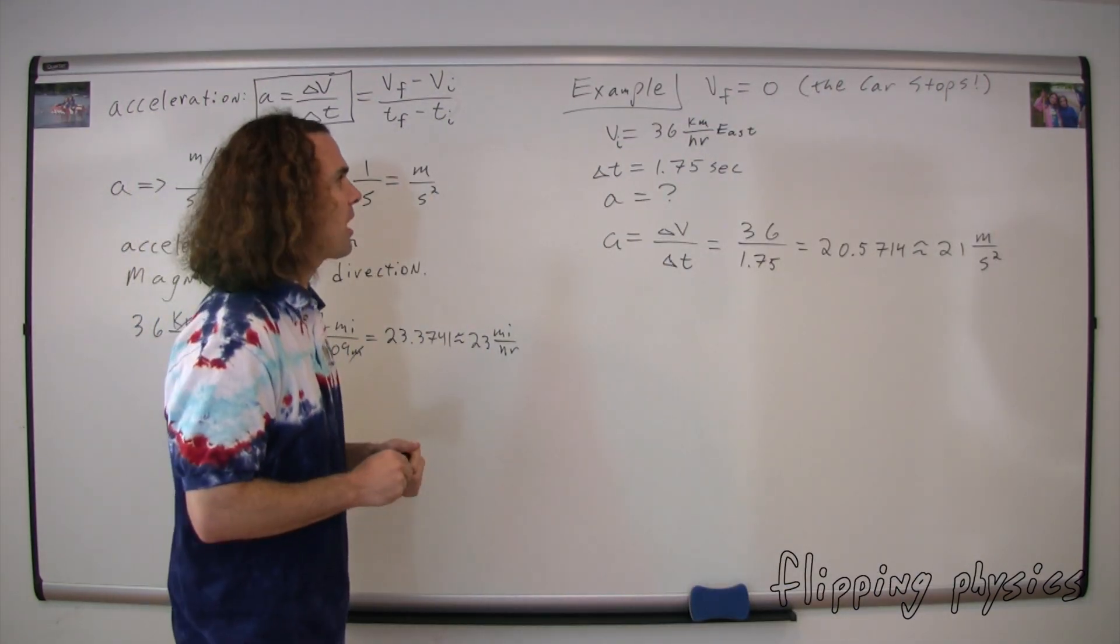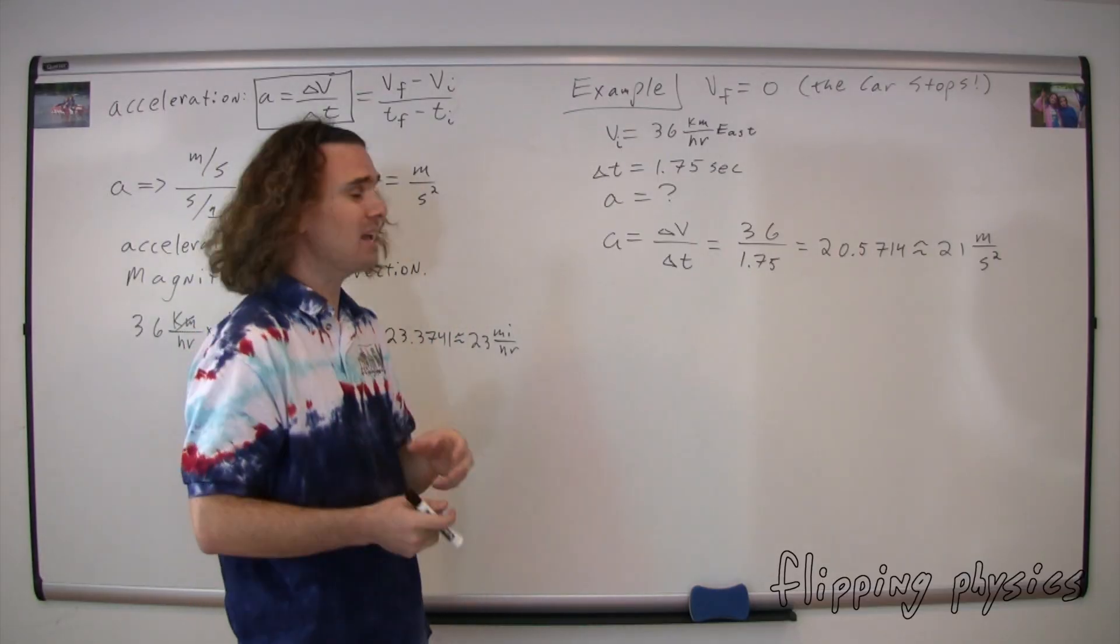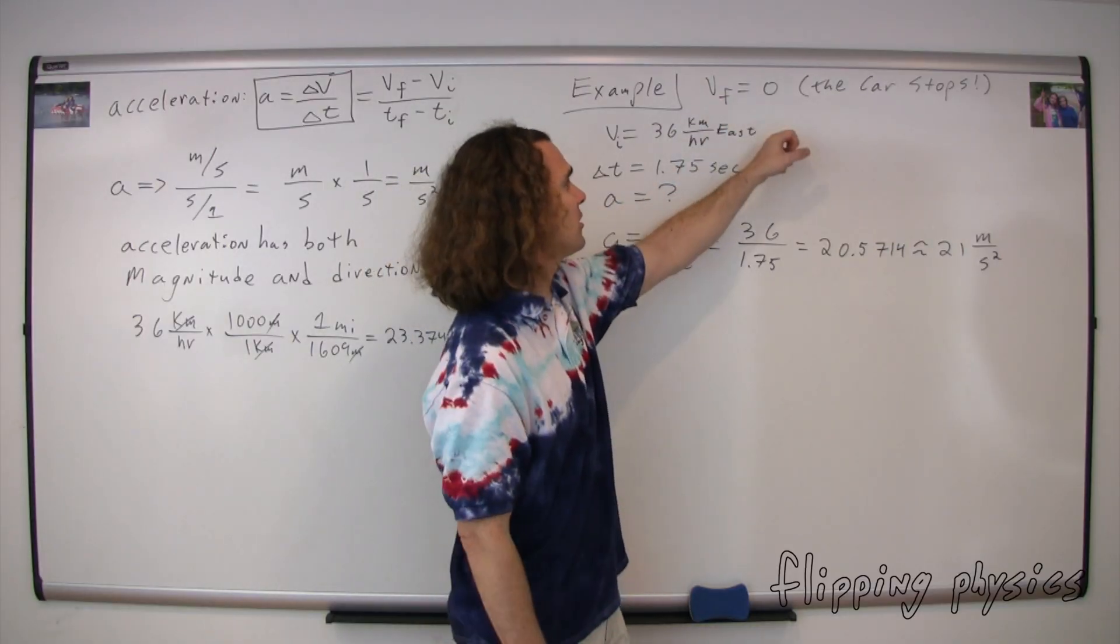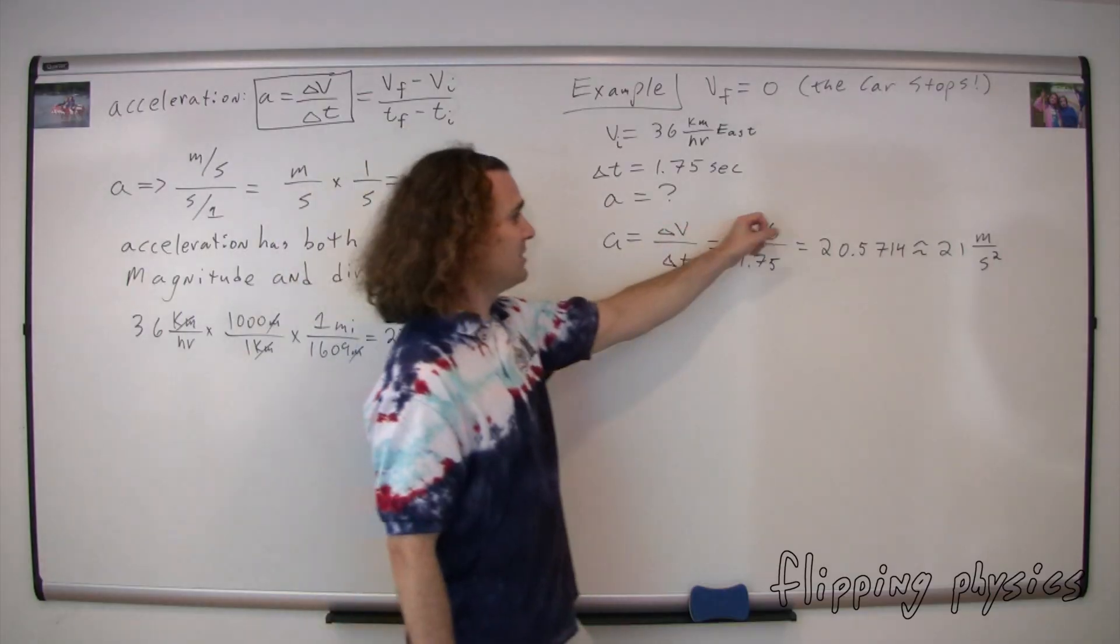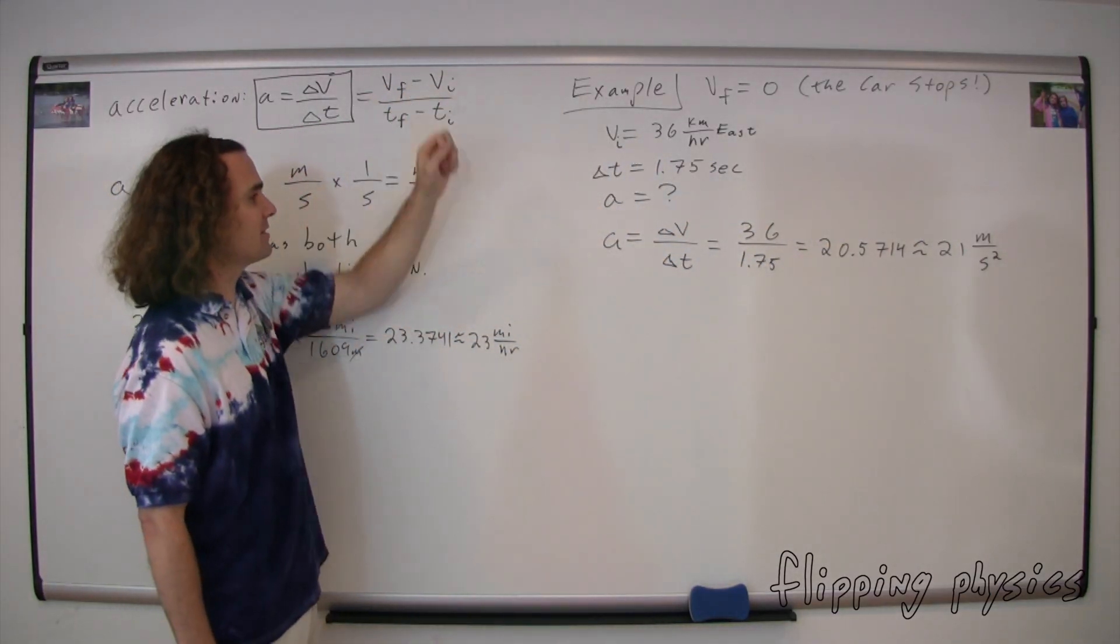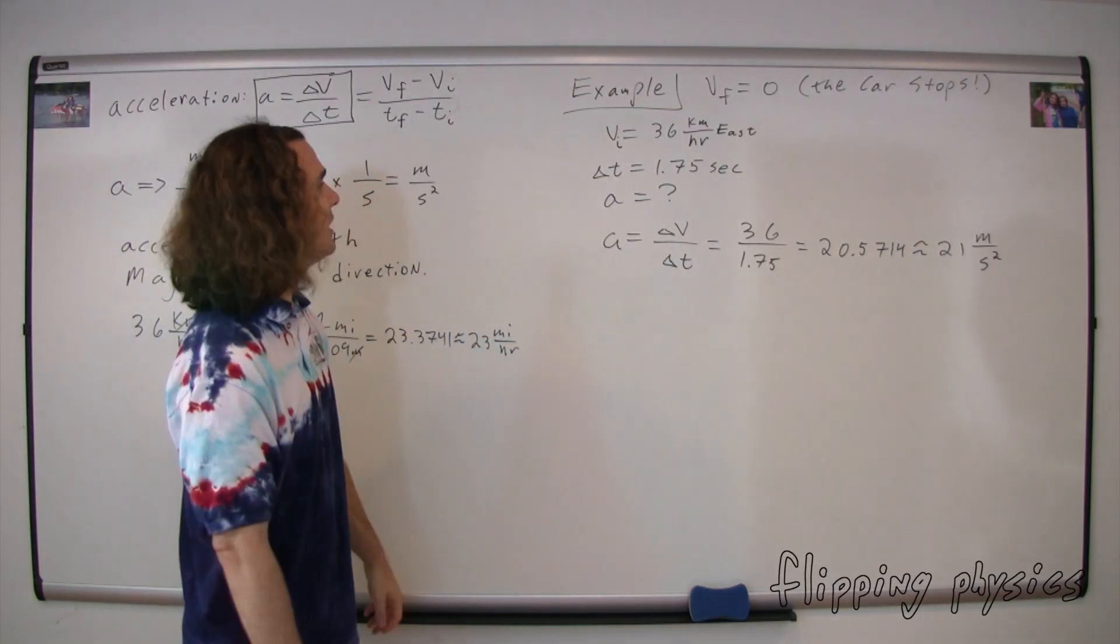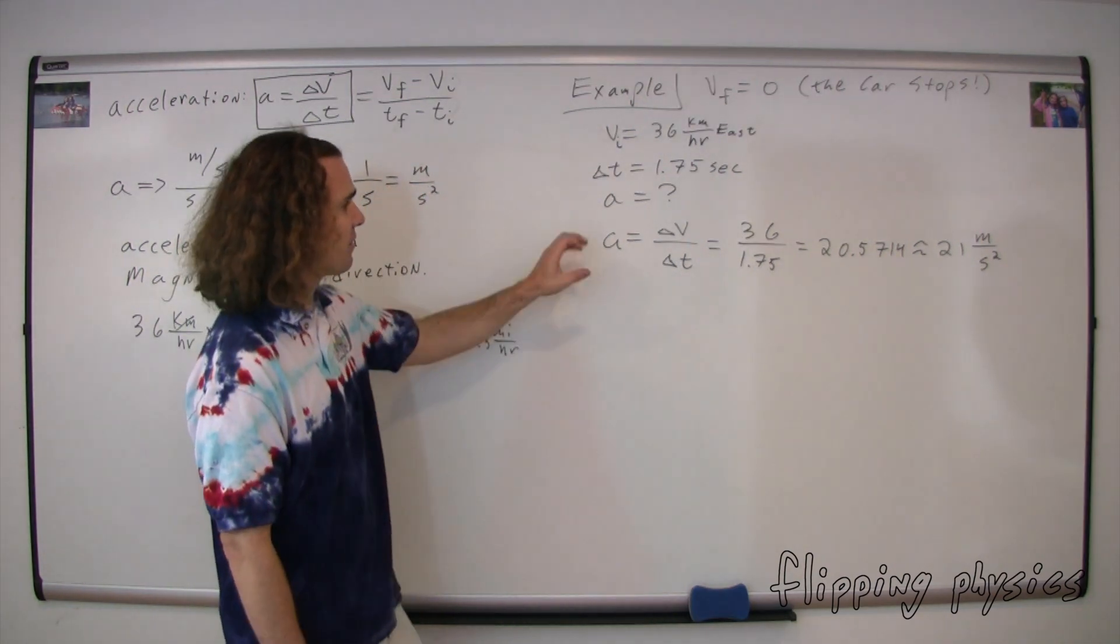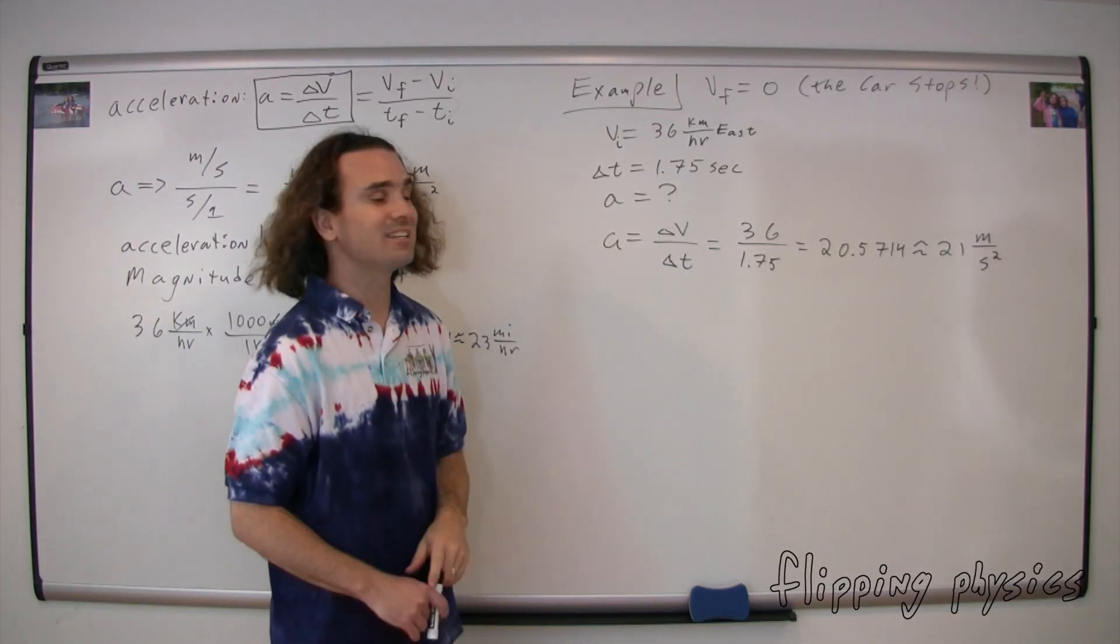Correct. This 36 kilometers per hour east wasn't the change in velocity, that was the velocity at a specific time, the velocity at the very beginning, or the velocity initial. We also know that the velocity final is equal to zero because this car comes to a stop. Therefore, this is not correct. We need to plug into the change in velocity, or velocity final minus velocity initial. We can leave the change in time on the bottom because we do know that the time duration is 1.75 seconds. That's not a time initial or a time final. That's the time duration.